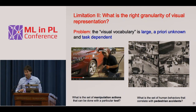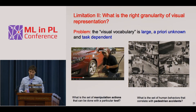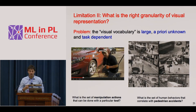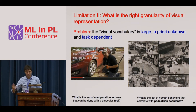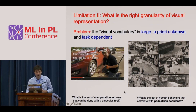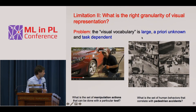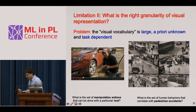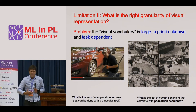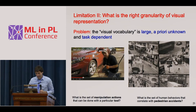The second, even bigger problem is that even if you have the manpower to annotate, it's often not clear what exactly you want to annotate. The key question is: what is the right granularity of the visual representation? The visual vocabulary of objects in the world is large, a priori unknown, and depends on the task. How would you annotate all possible actions with a tool, or the set of human behaviors correlating with pedestrian accidents? Annotating the entire visual vocabulary is nearly impossible.